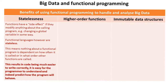The first is statelessness. Functions can have side effects if they modify anything about the calling program, for example changing a global variable. Functional languages however are stateless, meaning nothing about a functional program is dependent on how often it's called or the order in which it's called — and it's this last bit which is really important to remember. This results in code being much easier to write correctly, and it's easier for the programmer to understand and predict the behavior.